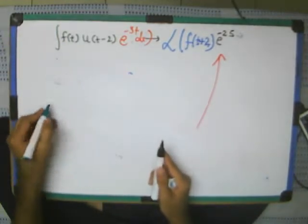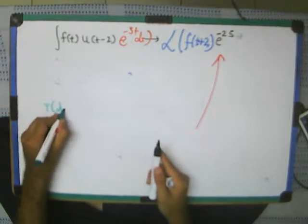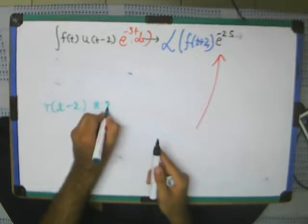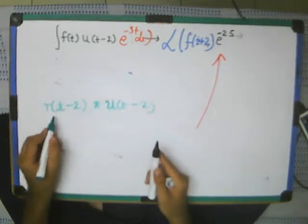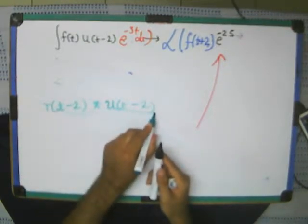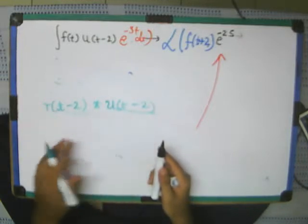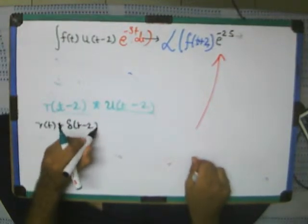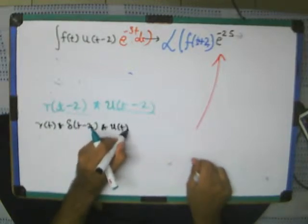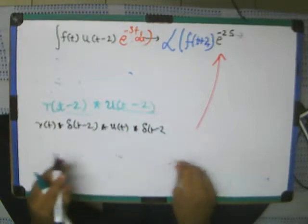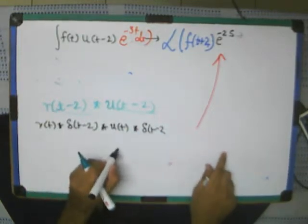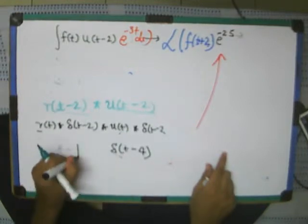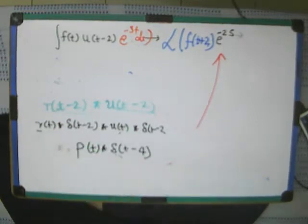Let me give you an example. For example, if I give you that r of this ramp of t minus 2, convolved with some, what we tell, u of t minus 2. Now just see. This is shifted by 2. This is again shifted by 2. Shifting by 2, shifting by 2. So, I can write it as ramp of t convolved with delta of t minus 2, convolved with u of t, convolved with delta of t minus 2. This 2 to right shifting. They will get as right shifting by 4. Delta of t minus 4 times. This ramp t convolved with u t. This will become parabola of t. Convolved with. So, this will be the answer. Simple as that.